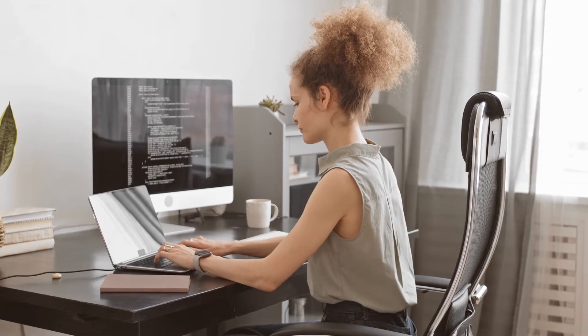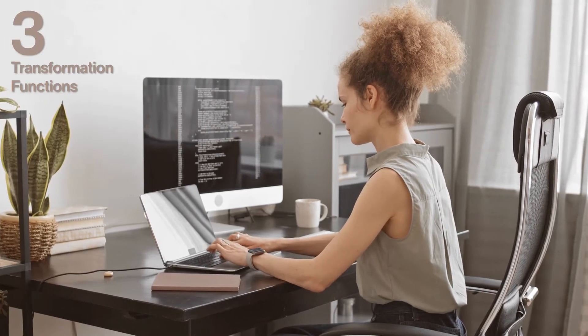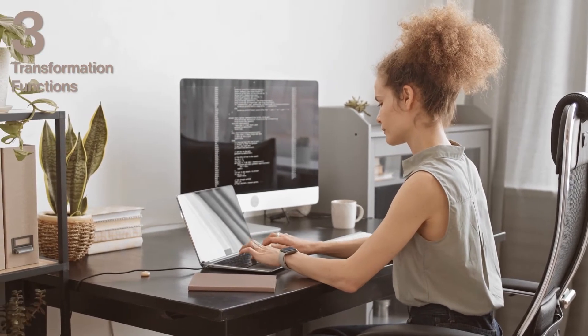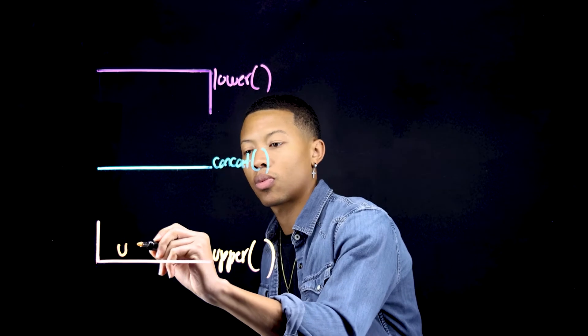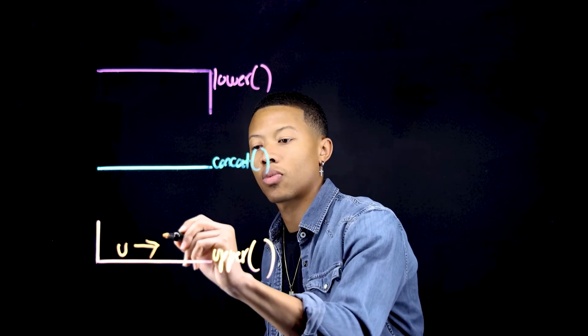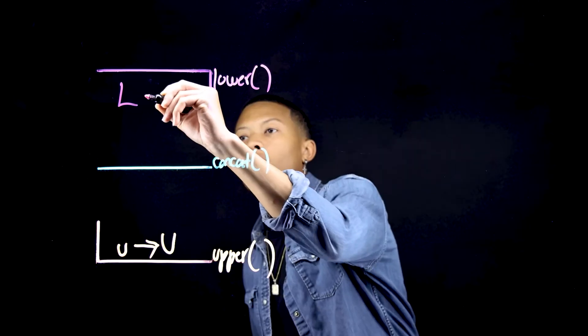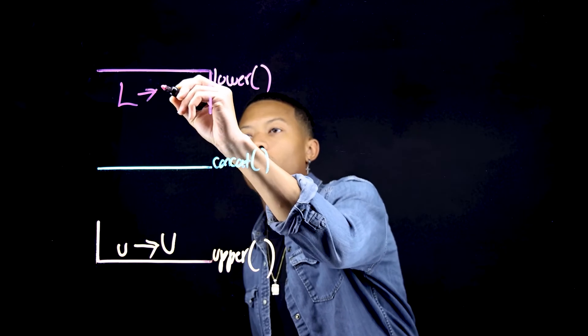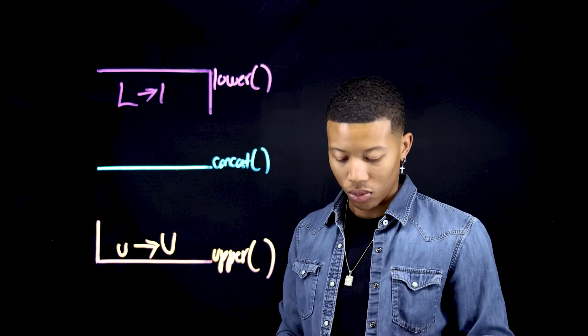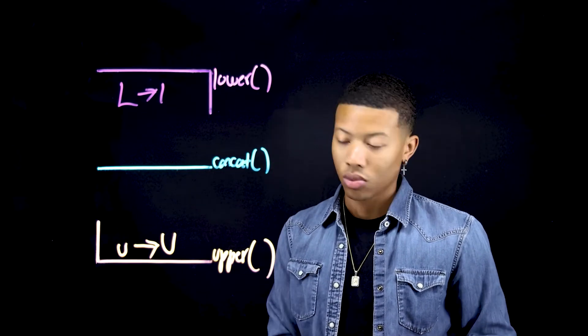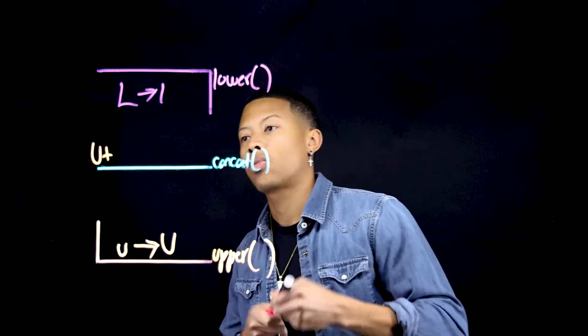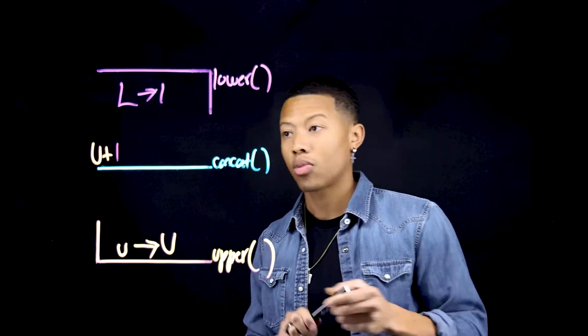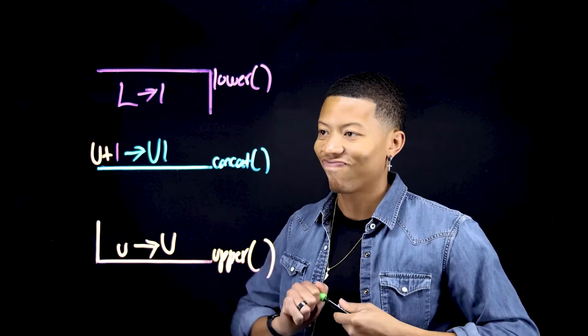In today's scenario, Stacey, a developer advocate for a startup, is going to use three transformation functions to manipulate data she's ingested from their GitHub repository. The three functions that she will use are: upper, which changes contents of a string field to uppercase letters; lower, which changes the text of a given string field to lowercase letters; and lastly, the concat function, which concatenates the values of a list of fields into a value in a new field.